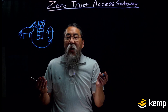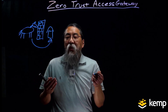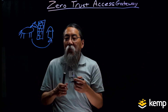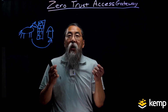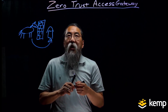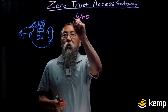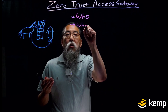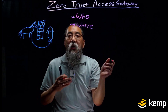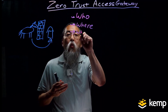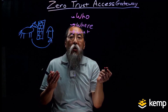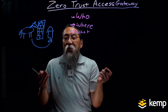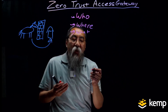So we have Kemp's Zero Trust Access Gateway, and it's a solution designed to simplify the application of a Zero Trust model for secure remote access to published workloads and services. Zero Trust models are designed to apply security anywhere and anytime for each individual application. They authenticate who is connecting, based on where this user or device is connecting from, and what they are trying to do on the network to the application.